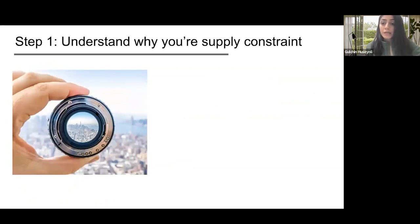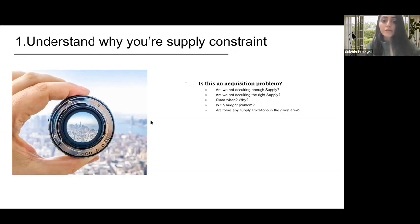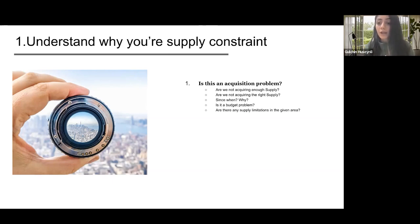So if we are working on the undersupply problem, it's very important for all of us to understand why we are supply constrained as a company. There might be several reasons. First of all, you should ask your colleagues or yourself if this is an acquisition problem. Maybe we are undersupplied because we are not acquiring enough suppliers, or maybe we are not acquiring the right suppliers. You need to collaborate with all the departments and check since when and why this is happening, and whether this is a budget problem — maybe you did some change with the budgeting lately which impacted your undersupply.